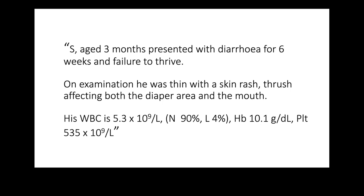Case number one: a three-month-old boy presented with diarrhea for six weeks and failure to thrive. On examination, he was thin with a skin rash, oral thrush affecting both the mouth and the diaper area. His full blood count showed a white cell count of 5.3 with 90% neutrophils and only 4% lymphocytes, with normal Hb and platelets. When you calculate the absolute lymphocyte count, it is around 200. If the absolute lymphocyte count is less than 2000 in an infant, you need to suspect severe combined immune deficiency, and if it is less than 1000, we are almost certainly dealing with SCID.